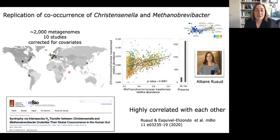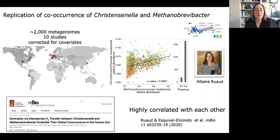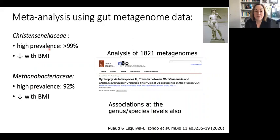One thing we've done is look for the co-occurrence of Christensenella and Methanobrevibacter. We pulled a couple thousand metagenomes from 10 different studies, and using available genomes of the Christensenaceae and Methanobacteriaceae, we could see that they're correlated across populations — not just in TwinsUK but across different people from different places. They co-occur and they correlate with low BMI. They have really high prevalence — you can find them in pretty much everybody at varying levels — but their levels are correlated with BMI across populations.